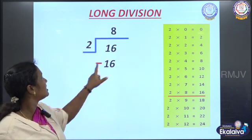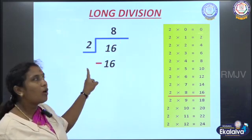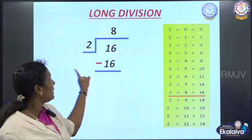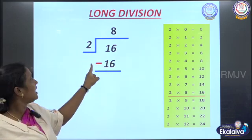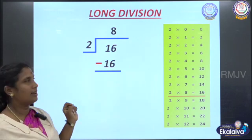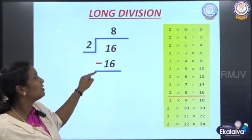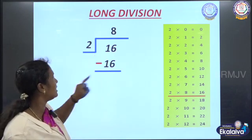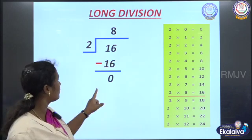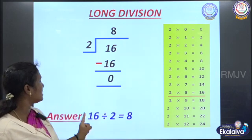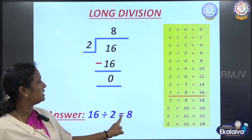2 eights are 16. So in 16, 2 is coming 8 times. We have to place 8 here. Then, since repeated subtraction is called division, we place the subtraction symbol here. We have 16 minus 16 — the same number — so we place 0. The answer is 16 divided by 2 equals 8.